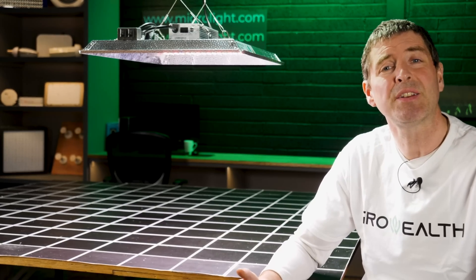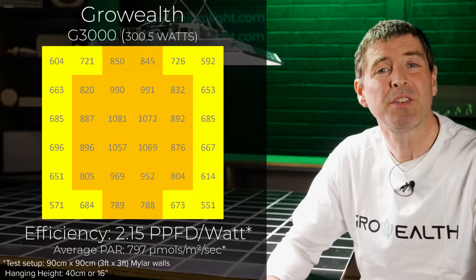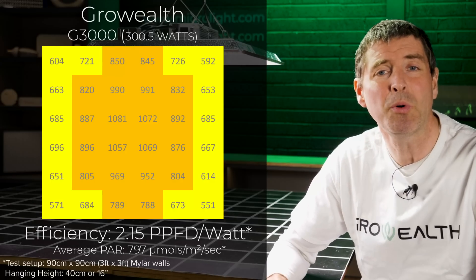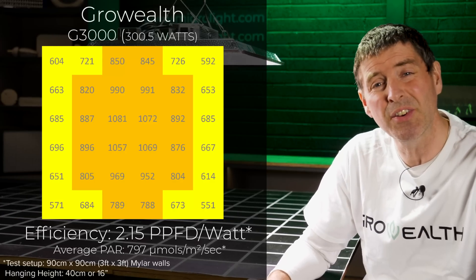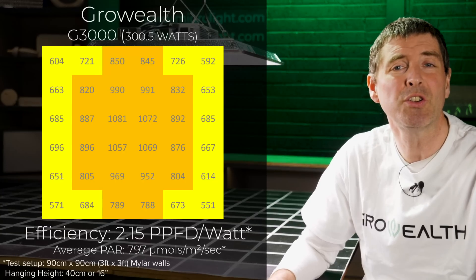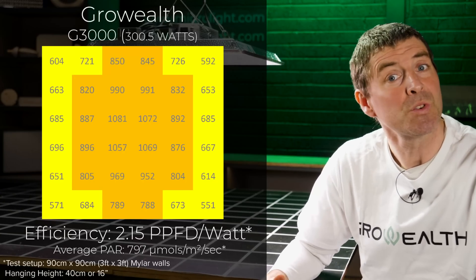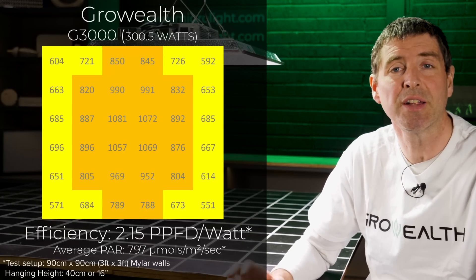And if you divide that total PAR output by the total power consumed, which is 300.5 watts, you get a system efficiency of 2.15 micromoles per watt or usable PPF per watt, which is a very good system efficiency for a light of this size.